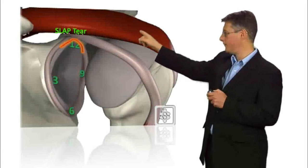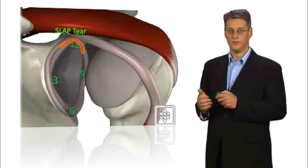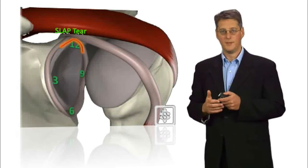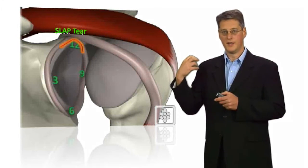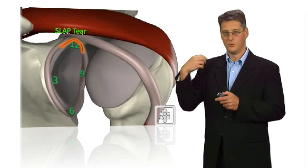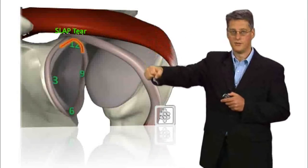If you get a tear of the labrum at the top of the shoulder, that's known as a SLAP tear. This is the area where the biceps attaches into the shoulder and this can occur with a throwing injury.